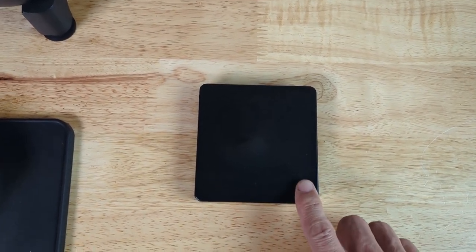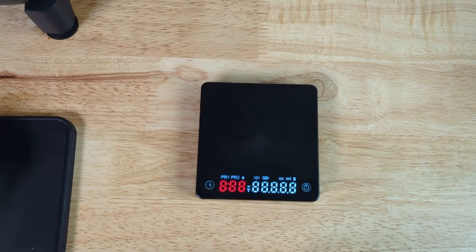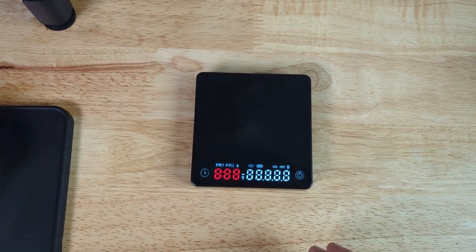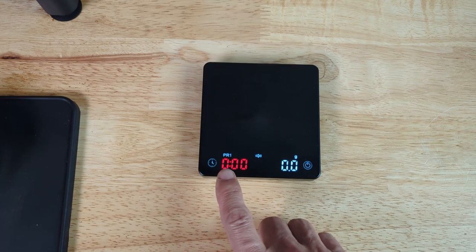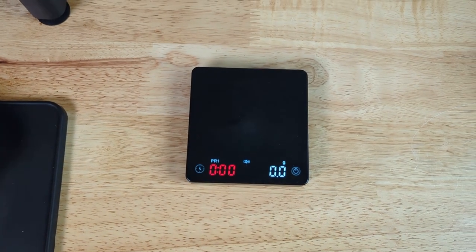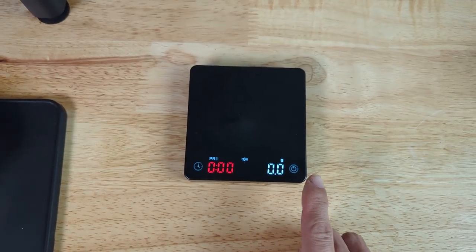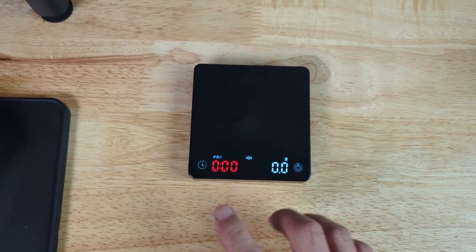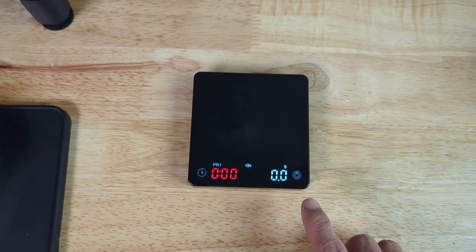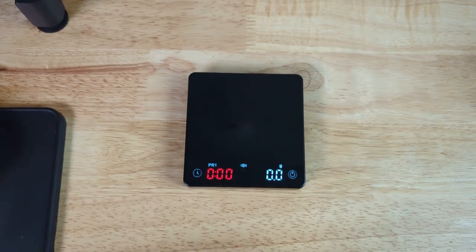So let's turn it on, long press to turn on the scale. Now you should see this is PR1 mode. Right now it doesn't show anything. So when you turn on the scale, make sure you don't put anything on top.